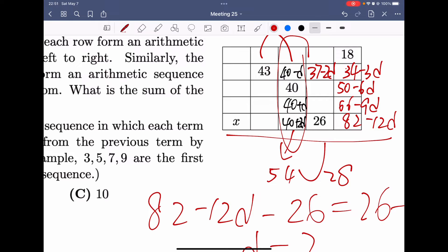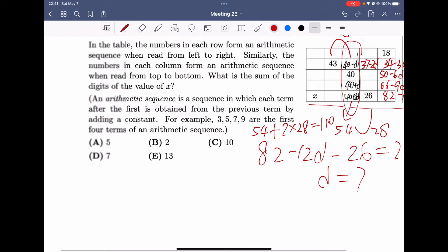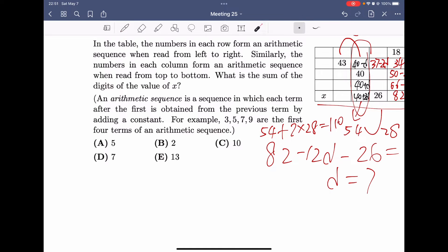And the common term in this row is 28. So, x should be 54 plus 2 times 28, which is 110. And the question asks us to find the sum of all the digits of the value x. So, 1 plus 1 plus 0 equals 2. So, B is the correct answer.